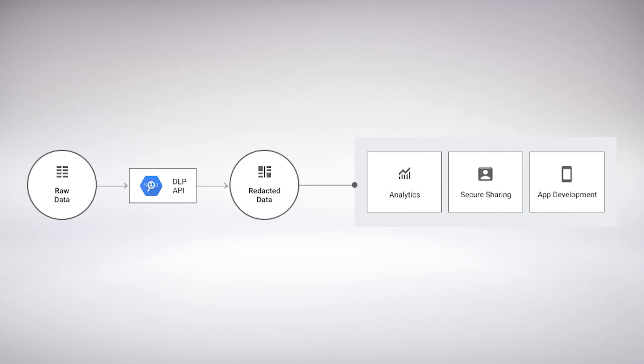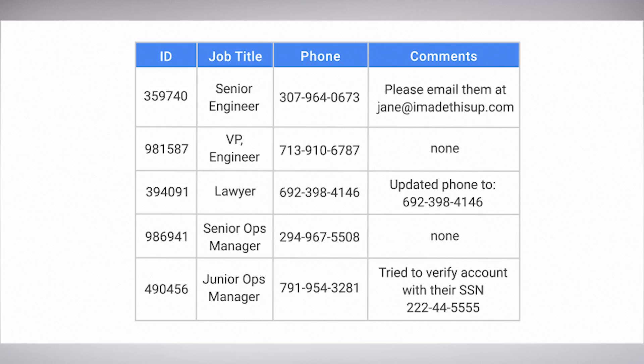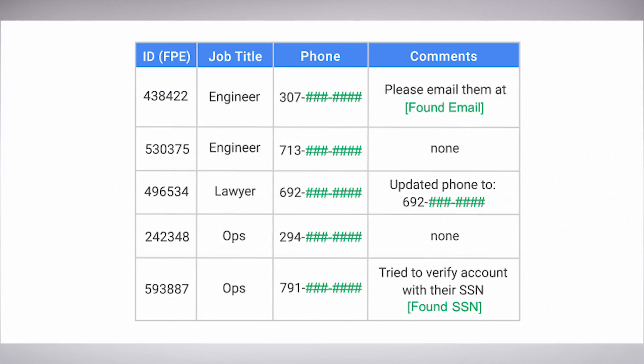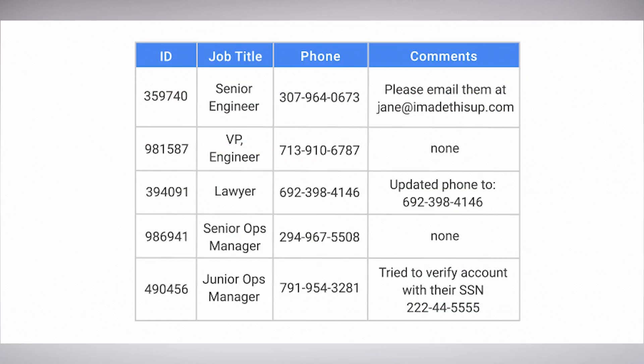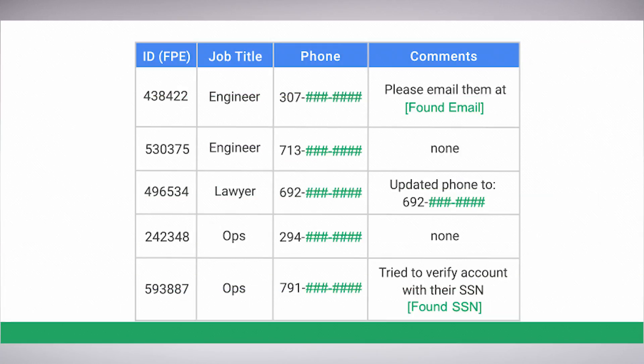The DLP API classifies raw data by using a set of predefined detectors to identify patterns, formats, and checksums. The API can even understand contextual clues. Once you know where your sensitive data lives, the API gives you the option to de-identify that data. De-identifying data removes identifying information from a data set, making it more difficult to associate the remaining data with an individual and reducing the risk of exposure. The resulting data is then suitable for apps, storage, or analysis.